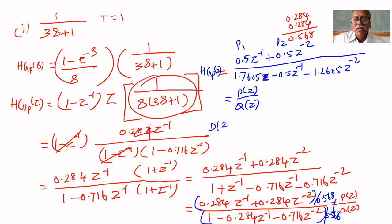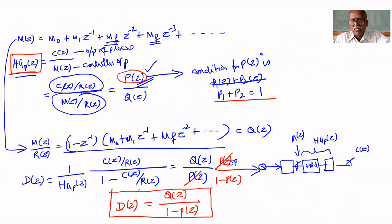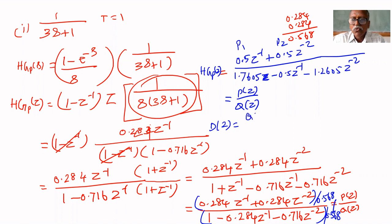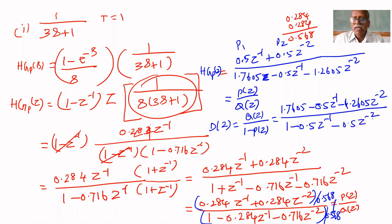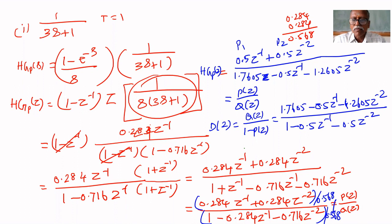Now D(z) equals Q(z) upon (1 - P(z)). That is (1.7605 - 0.5 z^(-1) - 1.2605 z^(-2)) upon (1 - 0.5 z^(-1) - 0.5 z^(-2)). So we have obtained the controller. We need to convert this into positive powers of z.